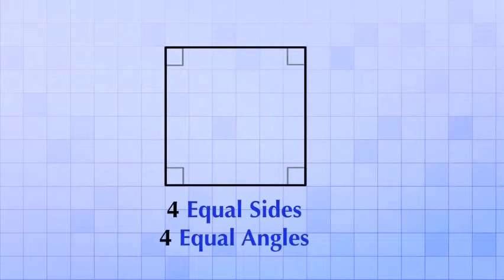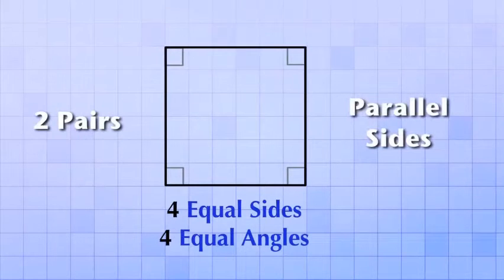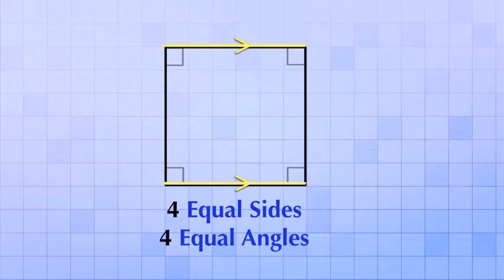Notice also that a square is formed by two pairs of parallel sides. These two opposite sides are parallel, and these two opposite sides are parallel. We'll see why that's important in a few minutes.